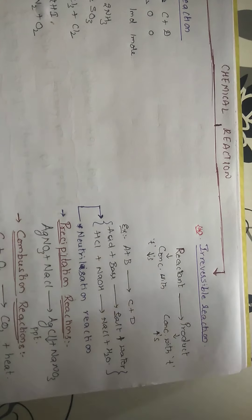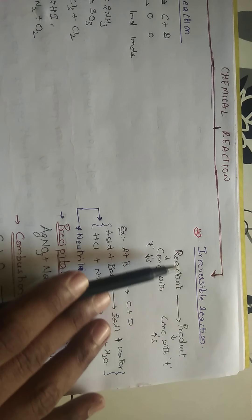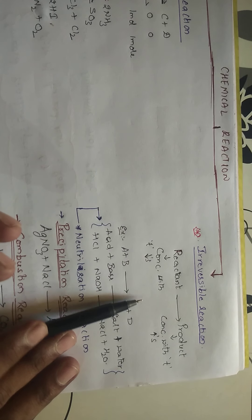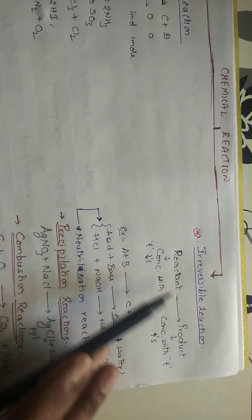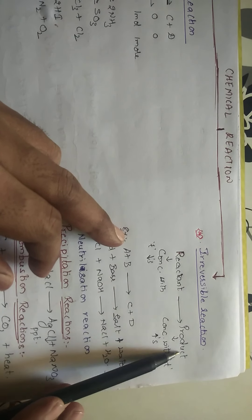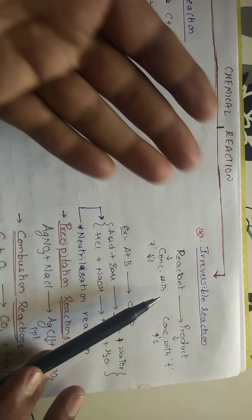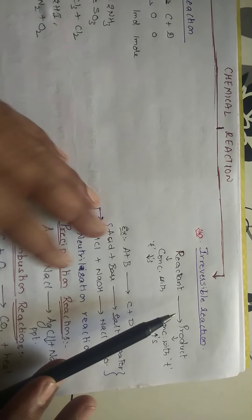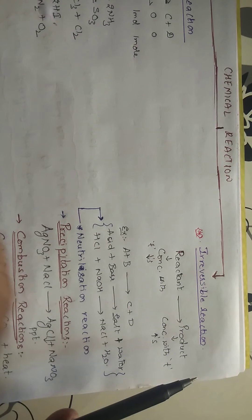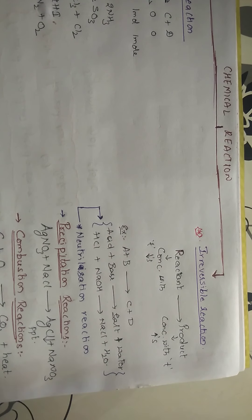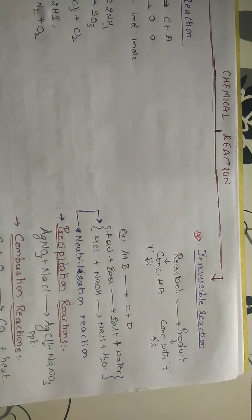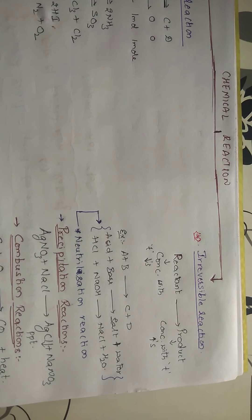In an irreversible reaction, the reactant gets converted only into product, and the product is not converting back into the reactant. At starting time the reactant is present and product is zero. As time increases, the reactant concentration goes on decreasing and the product concentration goes on increasing. At one stage, the reactant becomes zero and entirely converts to product — no reactant will be present. Such reactions where the product does not convert back to reactant are called irreversible reactions.